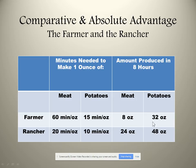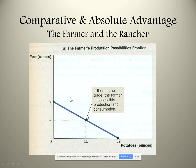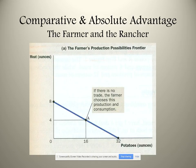Think of a production possibilities curve. If the farmer concentrates all resources on meat, he can make 8 ounces. If he focuses entirely on potatoes, he can make 32 ounces. Here is the farmer's production possibilities curve — 8 ounces of meat on one end, 32 ounces of potatoes on the other. Without trade, the farmer chooses to produce 4 ounces of meat and 16 ounces of potatoes, and that's also what he consumes. Let's pretend the farmer is self-sufficient, with no trade going on.